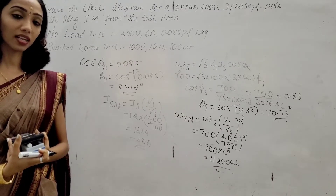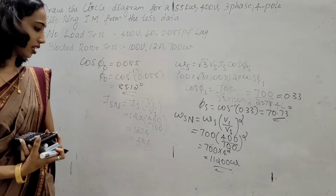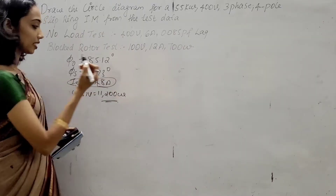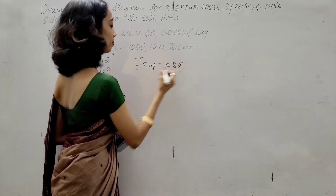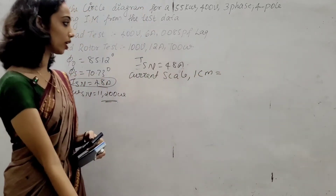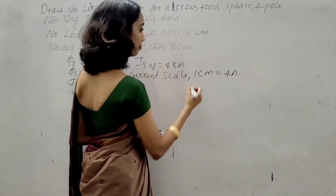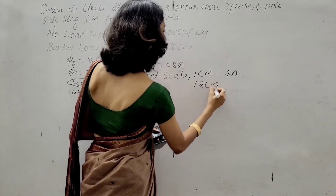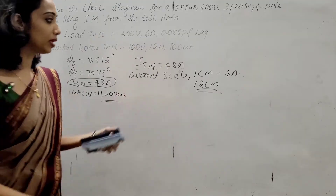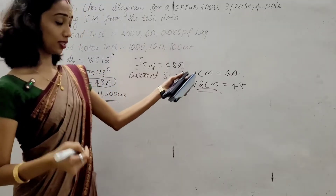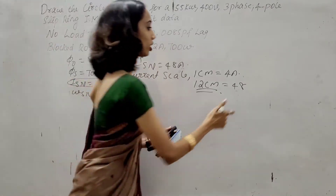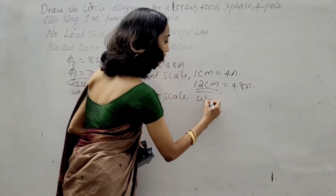ISN is equal to 48 ampere. We assign the current scale: 1 cm = 3 ampere, so 12 cm = 48 ampere. We also assign the power scale: WSN divided by AG length. WSN is 11,200 watt and the AG length is 4 cm, giving a power scale of 2,800 watt per centimeter.